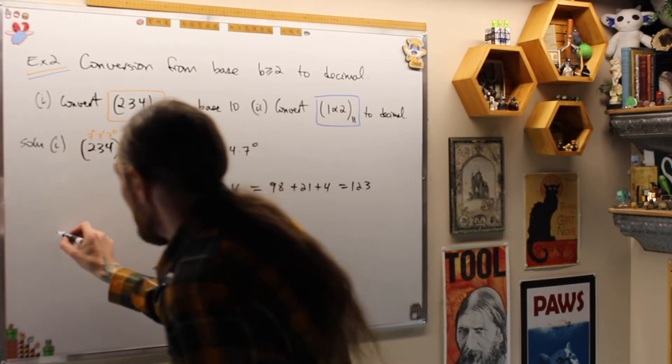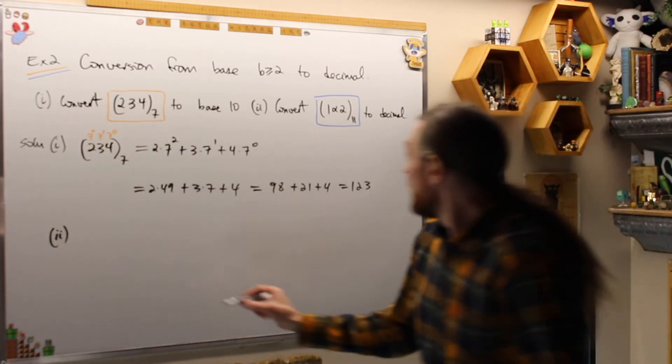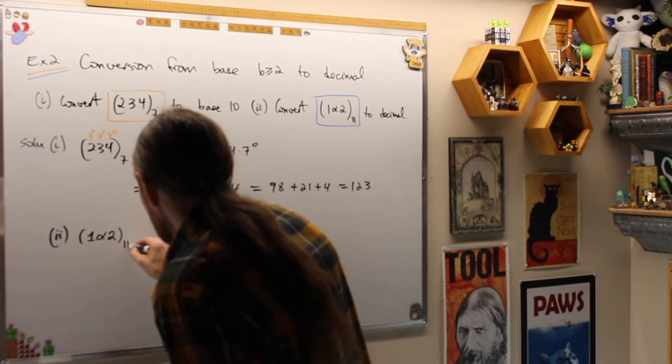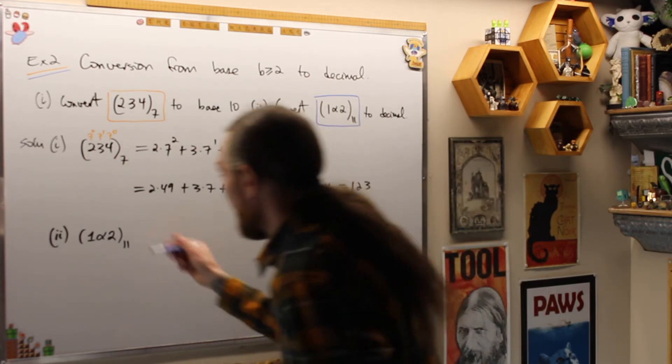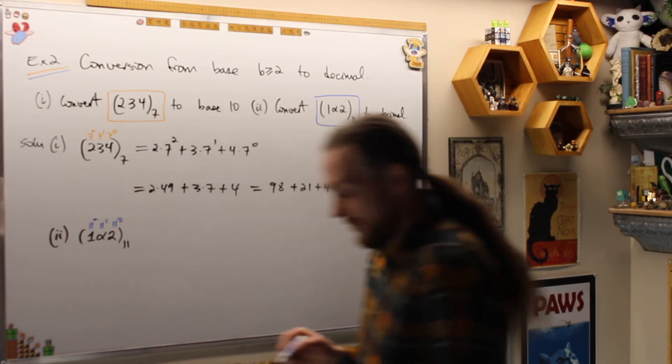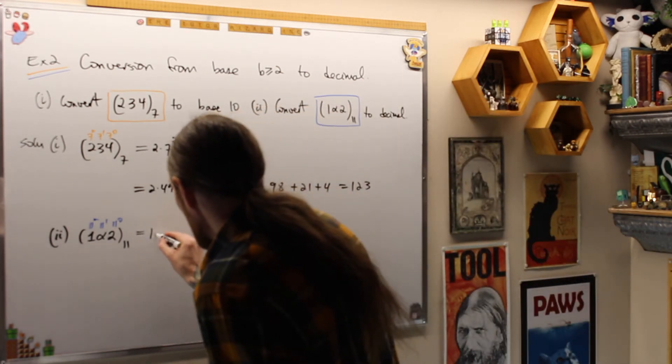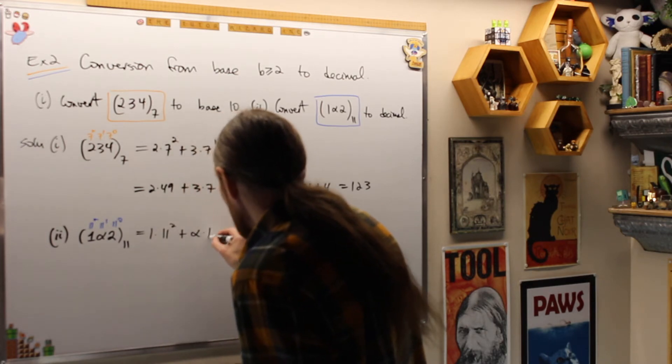For the other one, what we're going to do is 1-alpha-2 base 11. What that tells me again is I have 11 to the 0, 11 to the 1, 11 squared, which is 121. So I'm going to get this equal to 1 times 11 squared by definition plus alpha times 11 to the 1 plus 2 times 11 to the 0.